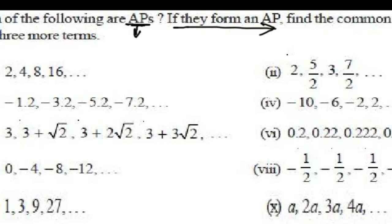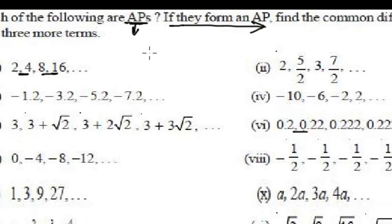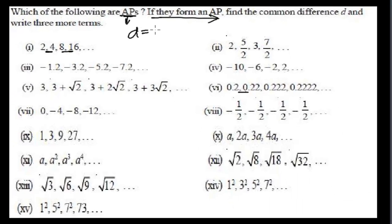As we have already learned, the main condition is that the difference between two consecutive terms must be constant everywhere. The common difference D must be constant throughout. If the common difference is constant in any series or sequence or progression, that progression will be an arithmetic progression.